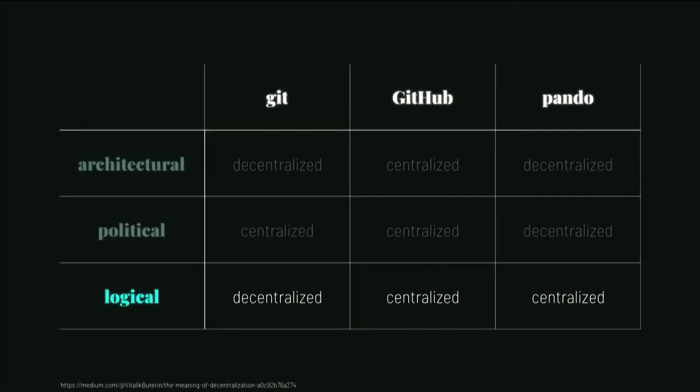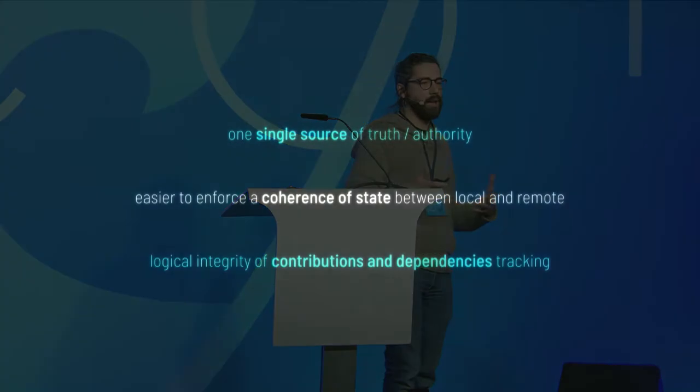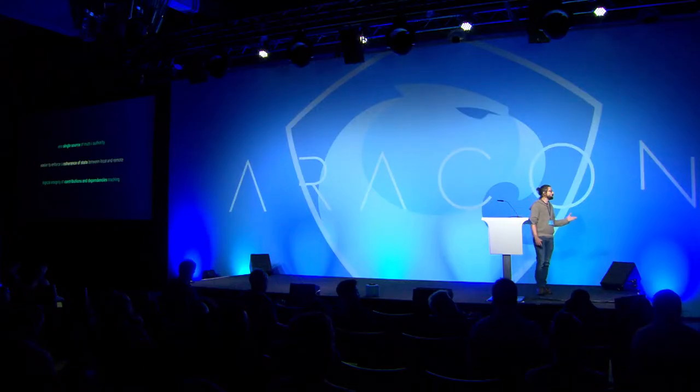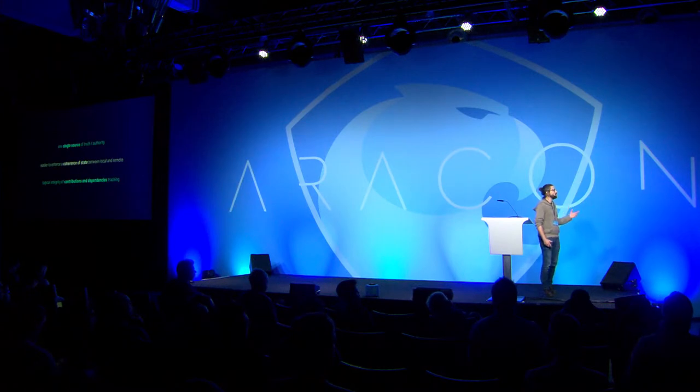The last point is about logical decentralization. Git is actually pretty decentralized here — when you have multiple clones of the same repo, no one of them has more authority than another about what the real version of the codebase is. But that's not how blockchain works, because the whole point of blockchain is to have a super decentralized system that in the end provides a single source of trust and authority. In Pando, the on-chain repo has more authority than your local clone, which allows us to enforce the logical integrity of the contribution and dependency tracking process.